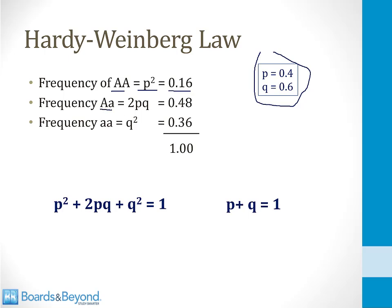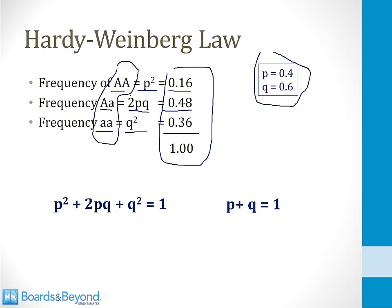The frequency of a capital A and a lowercase a together is 2 times p times q — that would be 2 times 0.4 times 0.6, which equals 0.48, or 48% of the time. And then finally, the frequency of two lowercase a alleles found together is q squared, equal to 0.6 times 0.6, or 0.36, which is 36% of the time. Note that these three numbers all add up to 1.0, because these are the only three ways that the two genes can be found together. That brings us to the second principle of the Hardy-Weinberg law: p squared plus 2pq plus q squared is equal to 1.